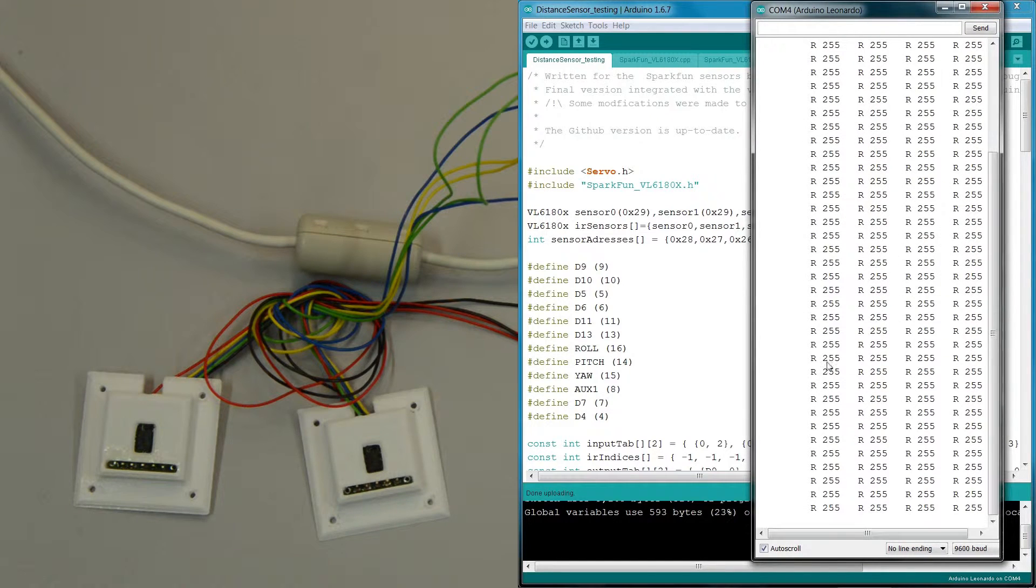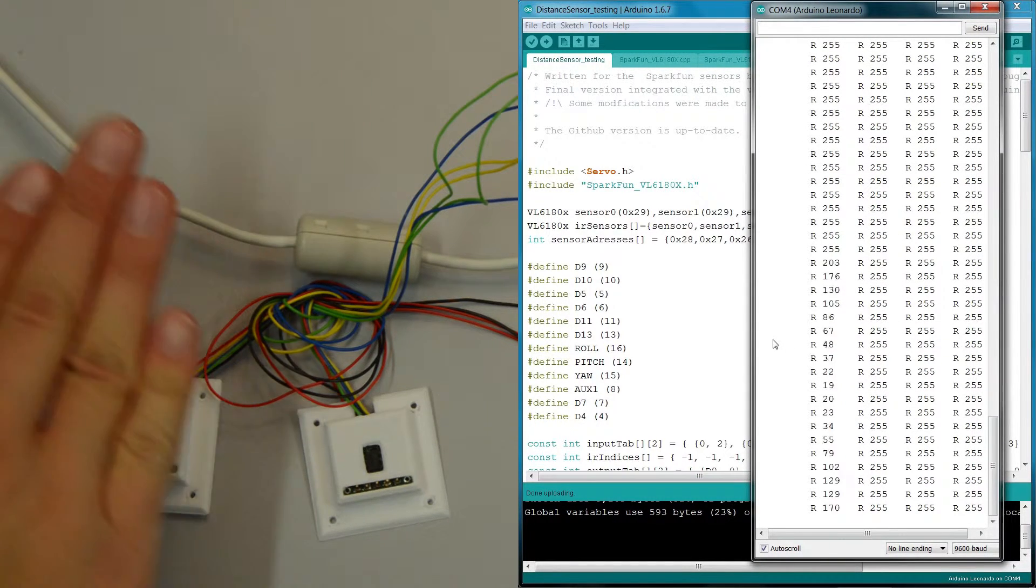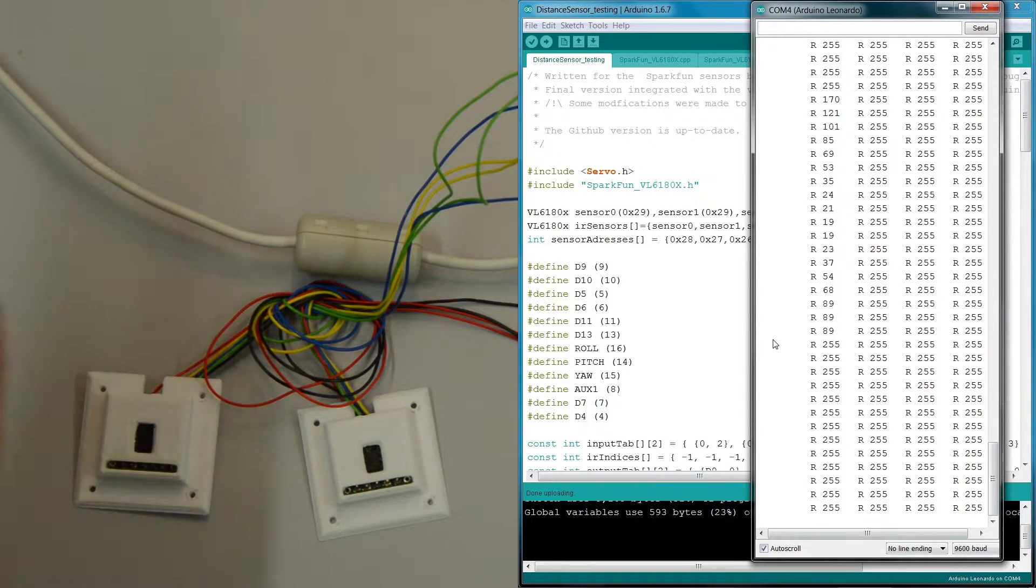Each column of data is the range measurement of the sensors in the order A0, A1, A2, A3.